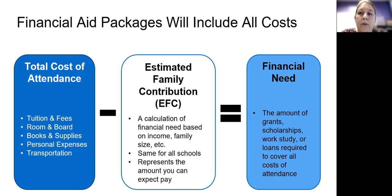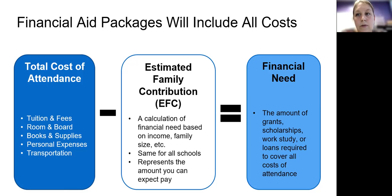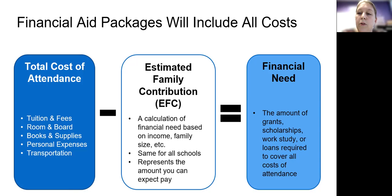The colleges will receive a report from the federal government that includes your estimated family contribution, and they will subtract that from their total cost of attendance — which includes tuition and fees, room and board, as well as estimated indirect costs like books, personal expenses, and transportation. After they calculate that, they will use it to calculate your financial need. This is the amount of grants, scholarships, work study, or loans that will be required to cover all the costs of your attendance.